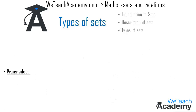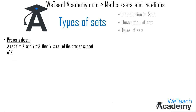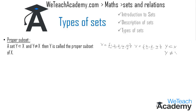A proper subset is defined as: set Y is a proper subset of X when Y is a subset of X and Y is not equal to X. For example, let X = {1, 2, 3, 4, 5} and Y = {2, 3, 4}. Every element of Y is also an element of X, so Y is a subset of X. However, elements 1 and 5 are in X but not in Y, so Y is not equal to X. Therefore, Y is a proper subset of X.